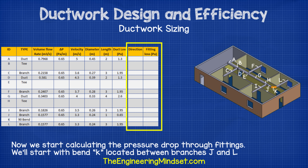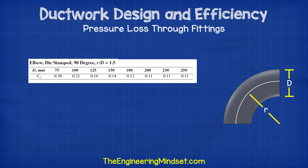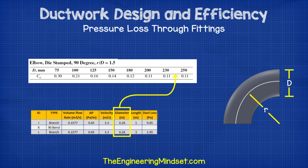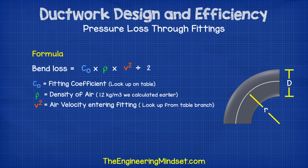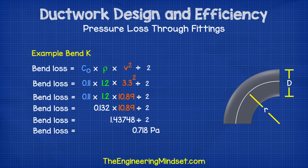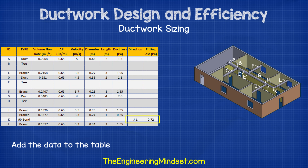Now we can start on the fittings. The first fitting we'll look at is the 90 degree bend between ducts J and L. For this, we look up the loss coefficient for the bend from the manufacturer or from the industry body. In this example, the coefficient comes out at 0.11. We then need to calculate the dynamic loss caused by the bend changing the direction of flow. For that, we use the formula CO multiplied by rho multiplied by V squared divided by 2, where CO is our coefficient, rho is the density of the air, and V is the velocity. If we drop these figures in, we get an answer of 0.718 pascals.